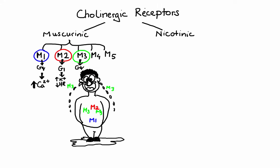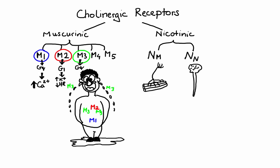The second major type of cholinergic receptors are the nicotinic receptors. Nicotinic receptors are ligand-gated ion channels. When acetylcholine binds to them, these receptors undergo a conformational change that allows sodium ions to flow into the cells. There are two types: receptors found at the neuromuscular junction are classified as NM and are responsible for muscle contraction, while receptors found in the central nervous system and autonomic ganglia are classified as NN and are mainly involved in transmission of cholinergic signals.